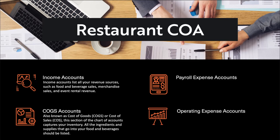Next is your COGS accounts, also known as cost of goods or cost of sales. This section of the chart of accounts captures your inventory. All the ingredients and supplies that go into your food and beverage should be listed here. Example subtypes include seafood cost, bakery cost, meat cost, etc.